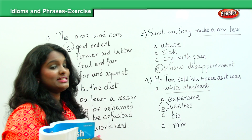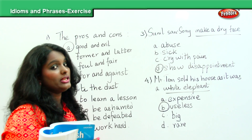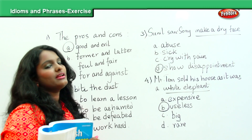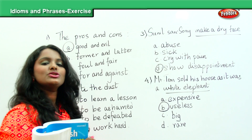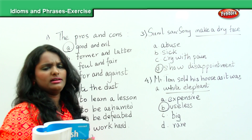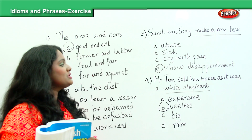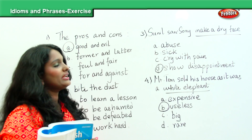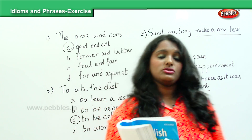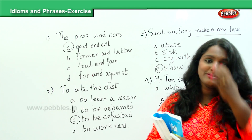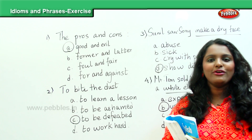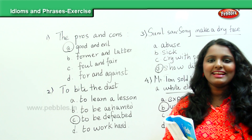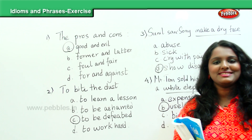A white elephant's meaning is 'useless' — they are in no way related to each other literally. Always stick to the idiomatic meaning of any idiom or phrase and not to the literary meaning. Mr. Tom sold his house as it was a useless one for him. Keep reading and keep practicing to master the idioms and phrases. Thank you very much.